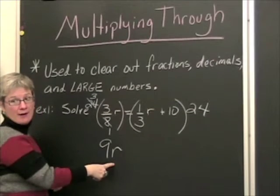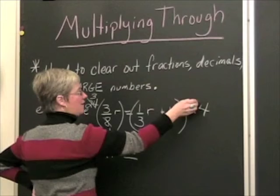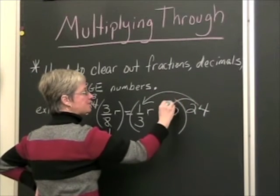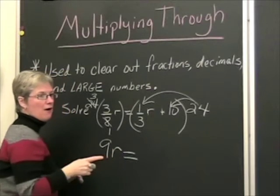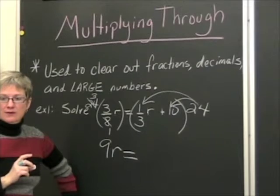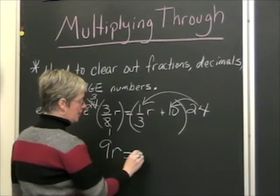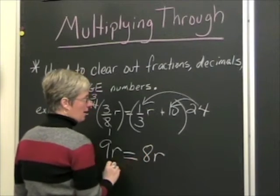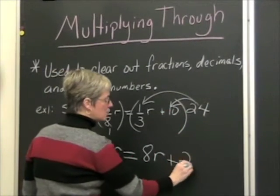Now let's see what happens over here. We're going to have to use the distributive property and take 24 times one-third r. Well, what's one-third of 24? Three goes into 24 eight times. So this is going to turn out to be 8r, plus 24 times 10, which is 240.